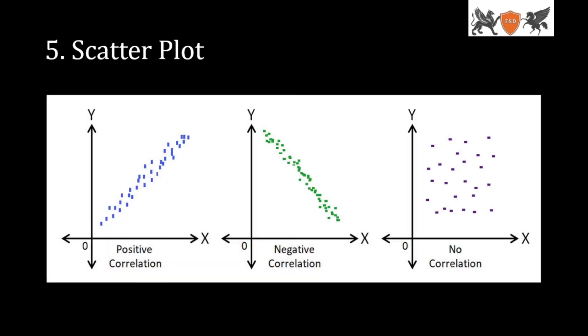The next tool is the Scatter Plot diagram. The purpose of the scatter plot is to find a relationship between your X variable and Y variable. There are three types in scatter plot: positive relation, negative relation, and no relation. The blue color represents positive relation. If your x-axis increases and y-axis also increases, that is positive relation.